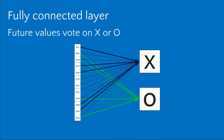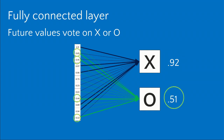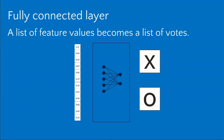The thicknesses of the connecting lines represent the weights — the strength of the vote between pixels and answers. If we get a new input we've never seen before, we use these votes in a weighted voting process, adding them up. In this case, we get a 0.92 total for X and a 0.51 total for O. Since 0.92 is more than 0.51, we declare X the winner and this input gets categorized as an X. The fully connected layer takes a list of feature values and produces a list of votes for each output category.